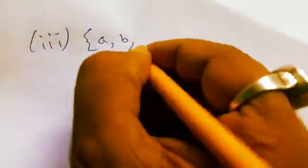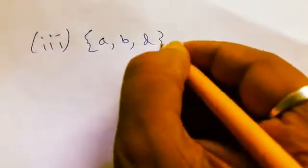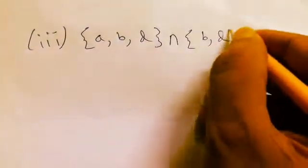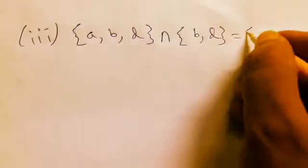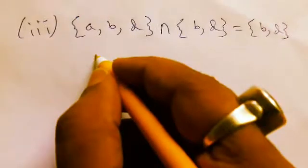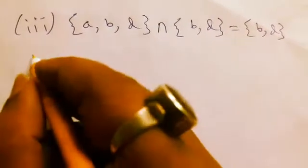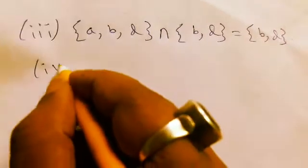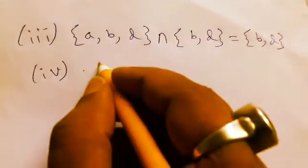For case three, taking {a,b,d} intersection {b,d}, we also find {b,d}, which is non-empty, as in the earlier cases.